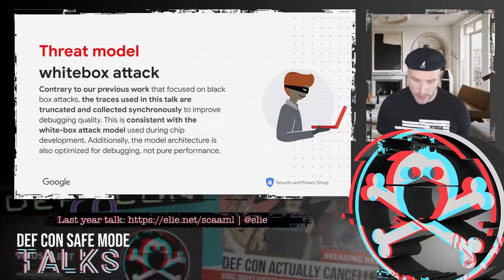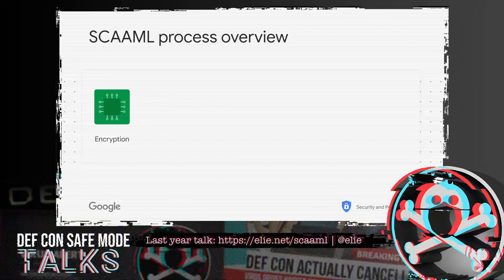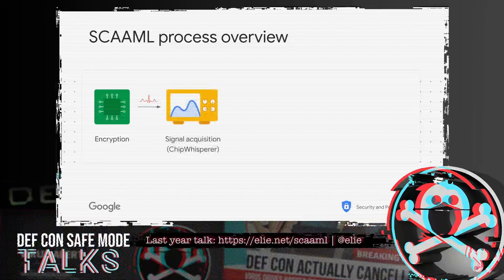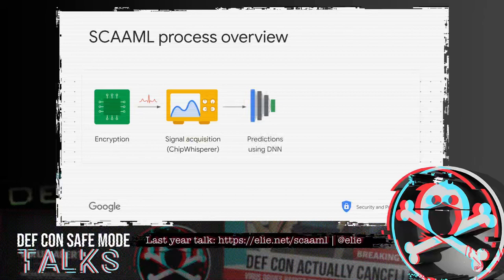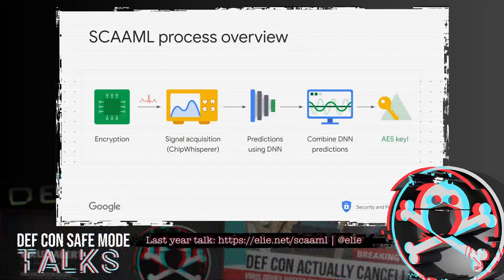The way side-channel attacks assisted by machine learning work is very similar to traditional side-channel attacks. You have the encryption running, you capture the trace, normalize between -1 and 1 because machine learning works in that range — which is not what your traditional oscilloscope will output — and then feed those traces to a deep neural network to make predictions on the values which can be used to recover the key. You combine those with a statistical estimate and hopefully get back your AES key. One advantage is you do not need any kind of pre-processing.